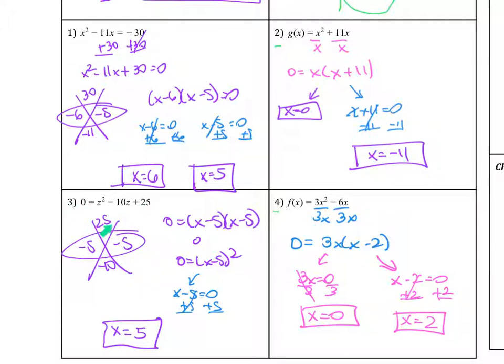For number 3, we write 25 on top and then negative 10 on the bottom. Negative 5 times negative 5 is positive 25, and that adds to negative 10. So I write my factors as zero equals x minus 5 times x minus 5, or I can also write that as zero equals x minus 5 squared. Then I do zero product property. x minus 5 equals zero, or x equals positive 5. I only have one x intercept. That tells me the vertex is moved over to the right at the 5. That's why there's only one.